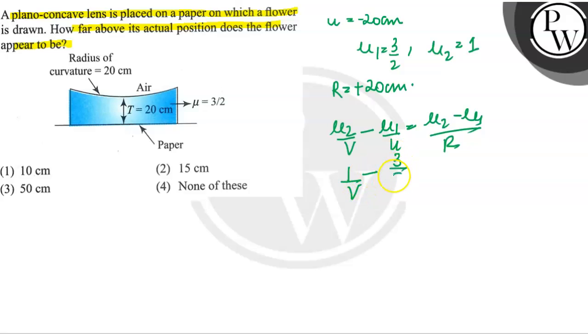So mu2 is 1 by v minus mu1 is 3 by 2, and u is equal to mu2 minus mu1, that is 1 minus 3 by 2, by r is 20.